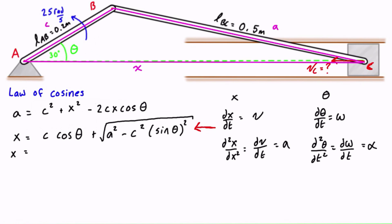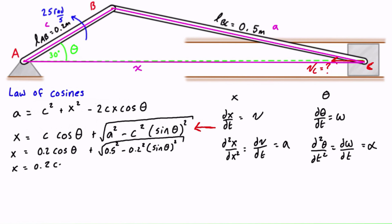We have x = c·cos θ + √(a² − c²·sin²θ), where small c is 0.2 m and small a is 0.5 m. Substituting: x = 0.2·cosθ + √(0.25 − (0.2·sinθ)²). It's easier to write this as x = 0.2·cosθ + (0.25 − (0.2·sinθ)²)^(1/2) when taking derivatives.